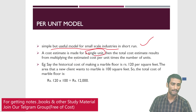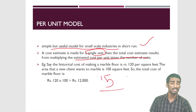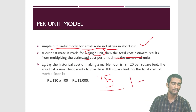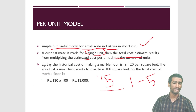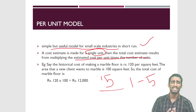For example, suppose the total biscuit packets we have to produce is 15. We first find the cost or estimate for a single packet — say it is 5 rupees — then we multiply 5 into 15. Another example: the historical cost for making marble floor is 120 rupees per square feet. Suppose we want to estimate the cost for 100 square feet, then we simply multiply. This is similar to the unitary method — find the value of one unit and multiply by the number of units required.